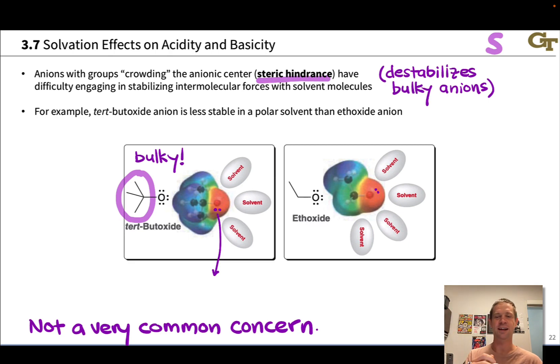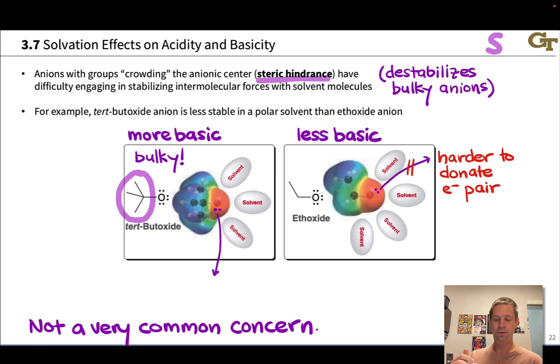In the bulky tert-butoxide anion with, again, fewer solvent molecules around the anionic center, than in ethoxide, where the large number of solvent molecules actually makes it a little bit harder to donate an electron pair. So the upshot here is the bulky anion is a bit more basic than the unhindered or less bulky anion. And so the stronger Bronsted base is the tert-butoxide anion, and the weaker base is ethoxide.